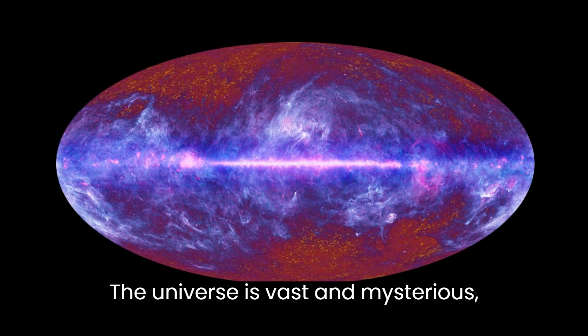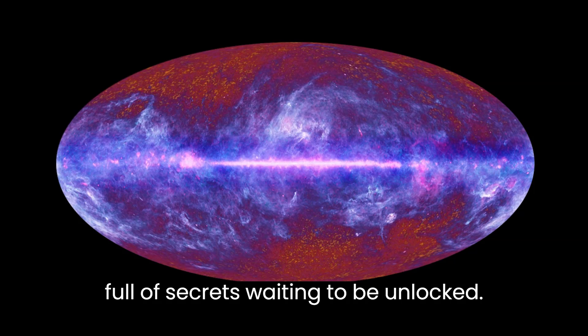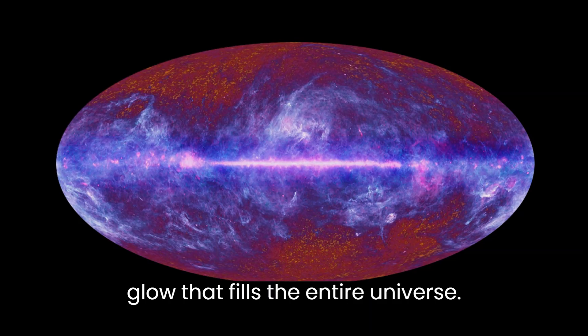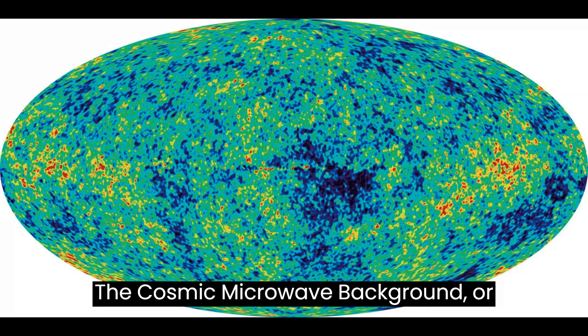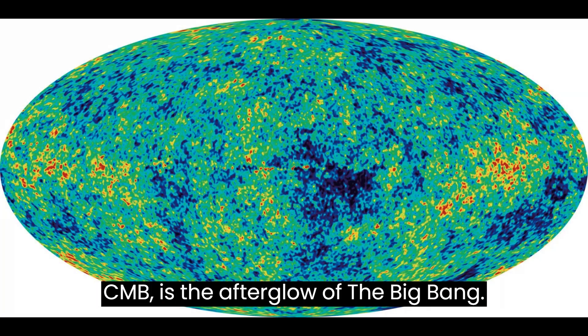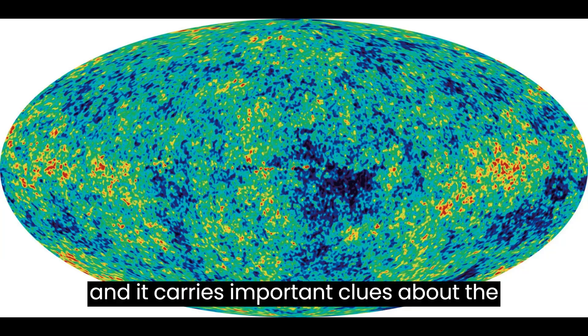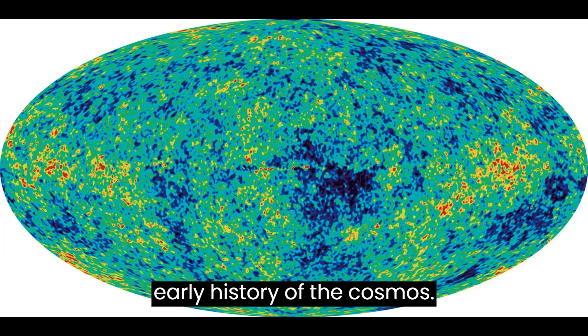The universe is vast and mysterious, full of secrets waiting to be unlocked. One of the greatest mysteries is the cosmic microwave background, a faint glow that fills the entire universe. The cosmic microwave background, or CMB, is the afterglow of the Big Bang. It's the oldest light in the universe and it carries important clues about the early history of the cosmos.